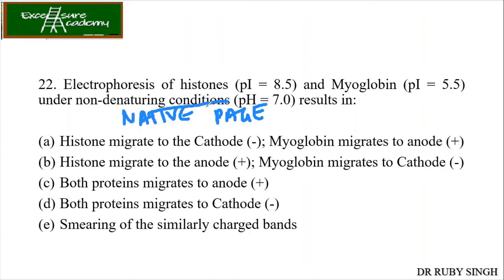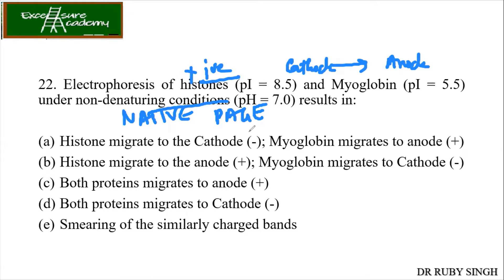In native PAGE conditions, SDS is not present. So histones, being positively charged, will move towards the cathode, which has negative charge. Now myoglobin, with a pI of 5.5 — when kept at pH 7 — is going to be negatively charged, and hence it is going to move towards the anode.